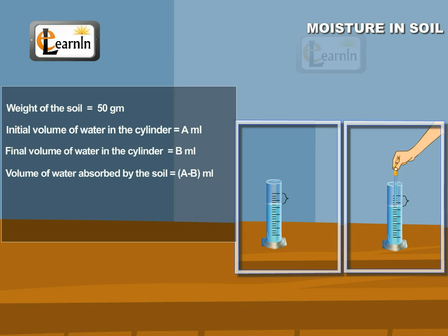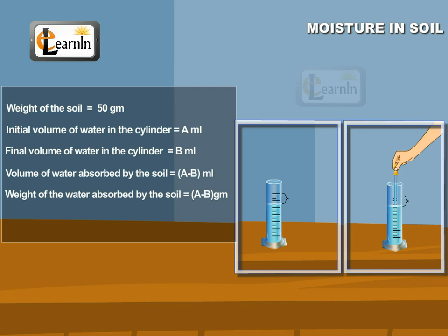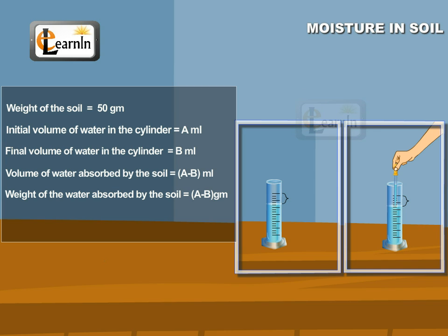Volume of water absorbed by the soil: a minus b ml. Weight of the water absorbed by the soil: a minus b grams. Percentage of water absorbed: (a minus b) divided by 50, into 100.